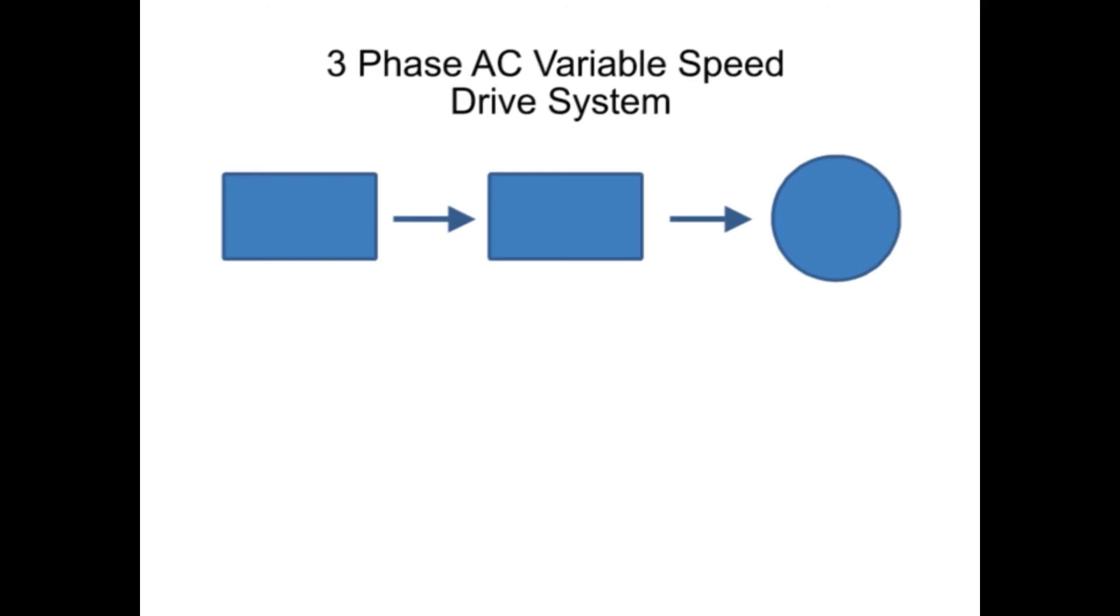This block diagram illustration depicts a typical three-phase AC variable speed drive system. It has three main components: an operator control, a drive controller, and an AC motor.